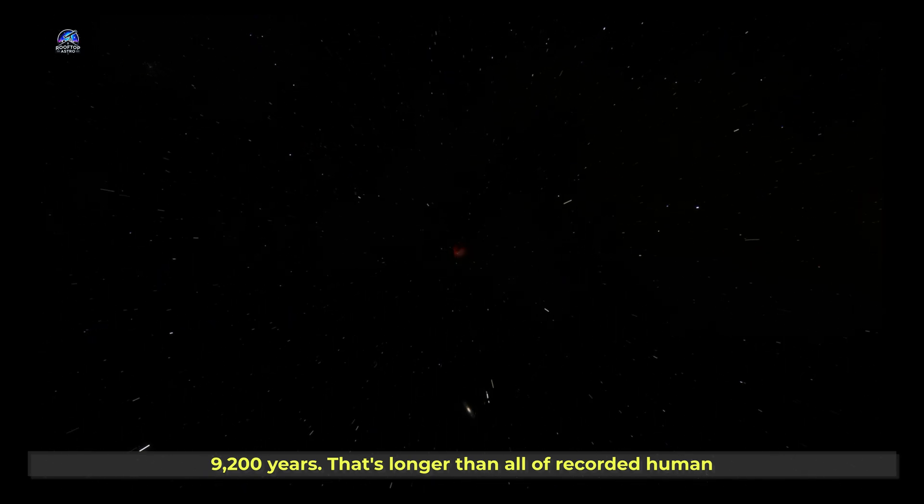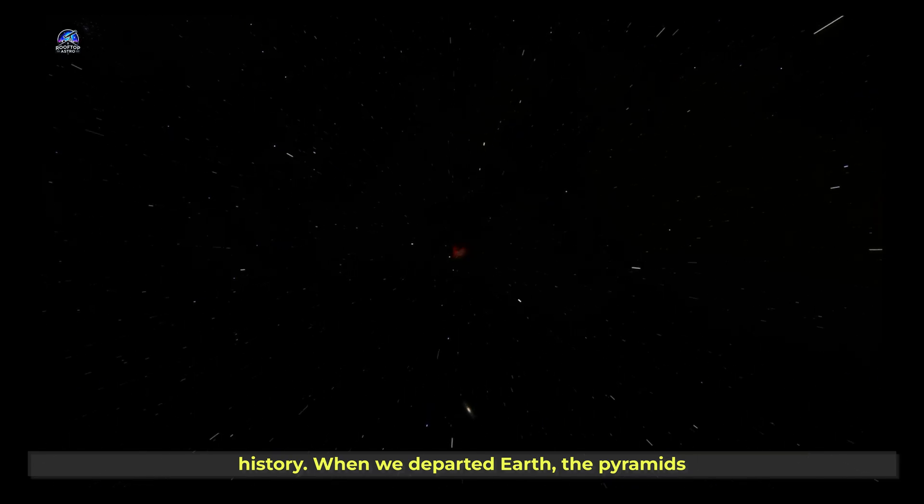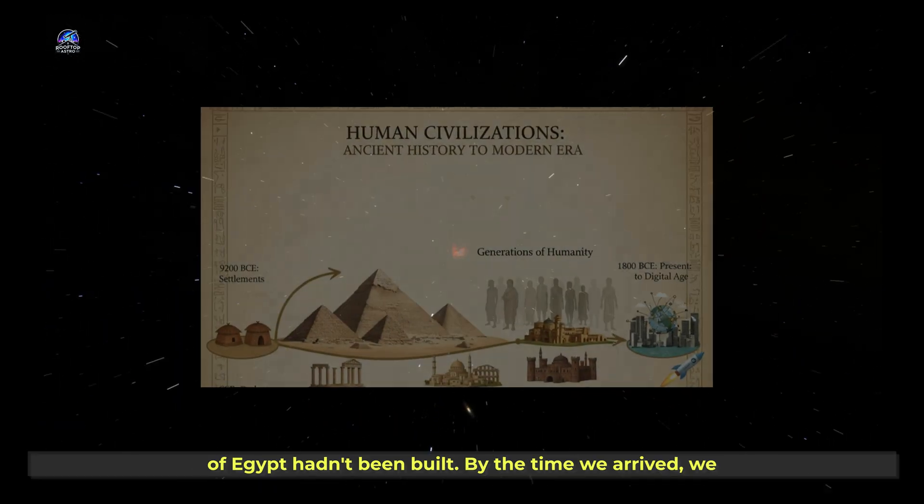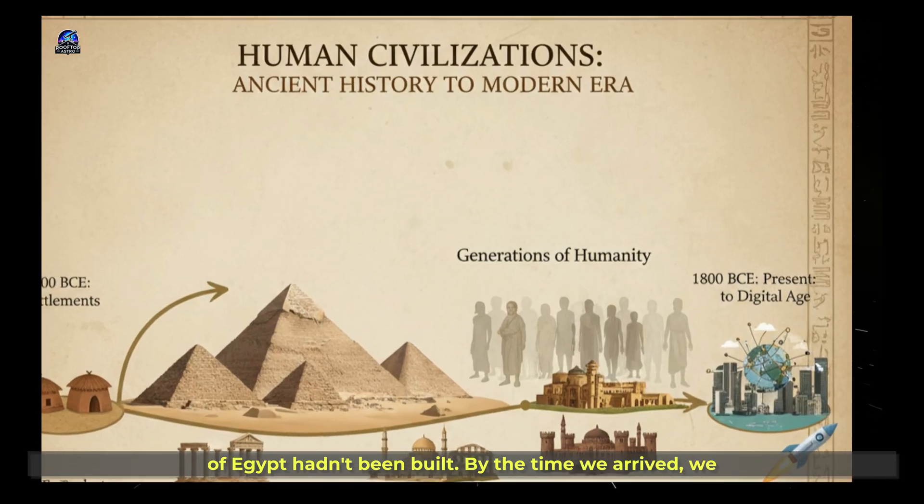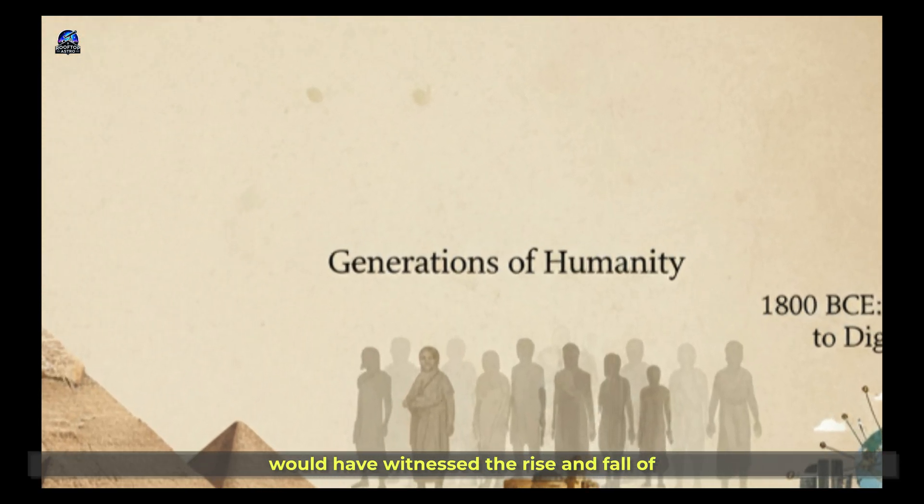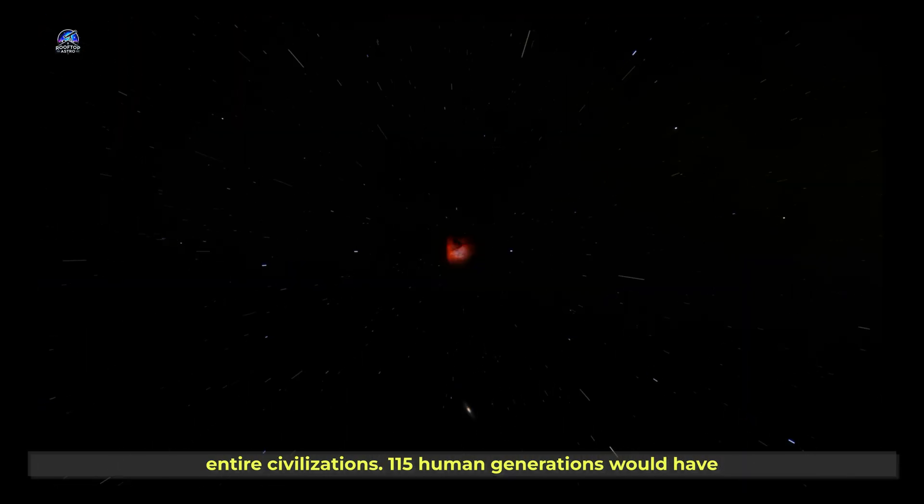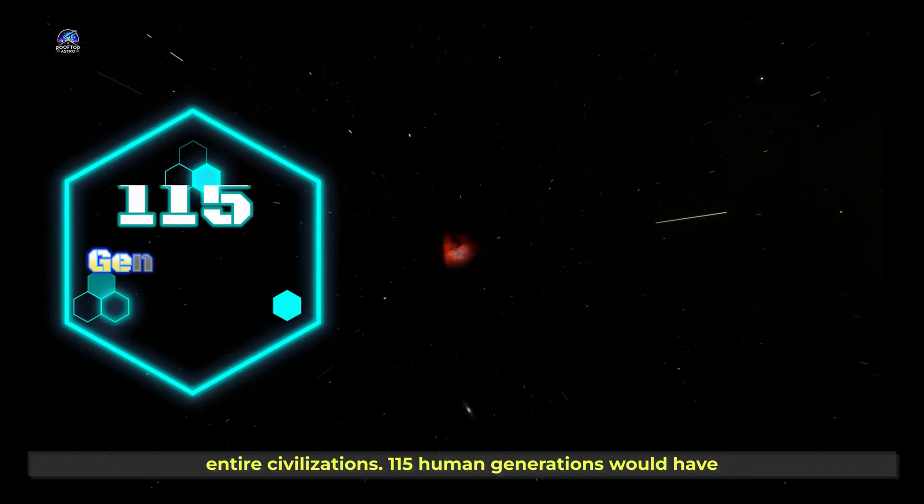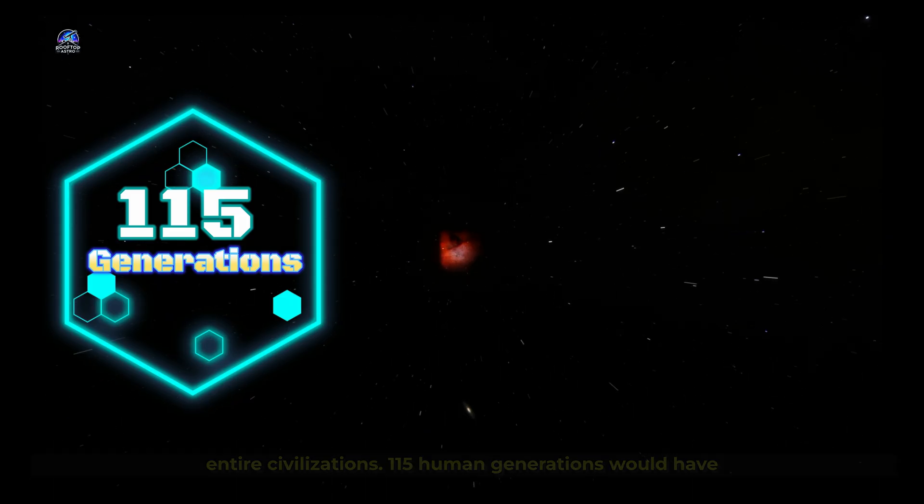That's longer than all of recorded human history. When we departed Earth, the pyramids of Egypt hadn't been built. By the time we arrived, we would have witnessed the rise and fall of entire civilizations. 115 human generations would have passed.